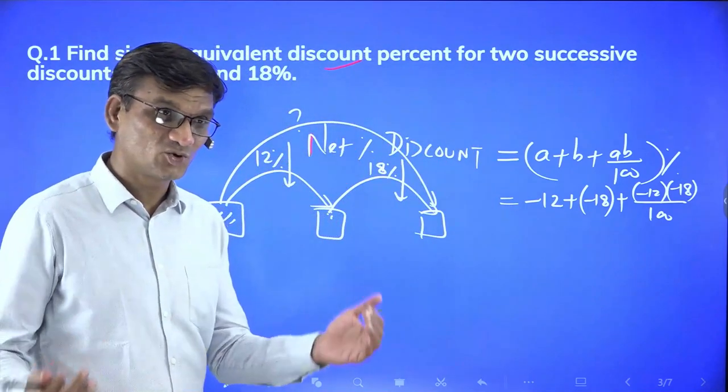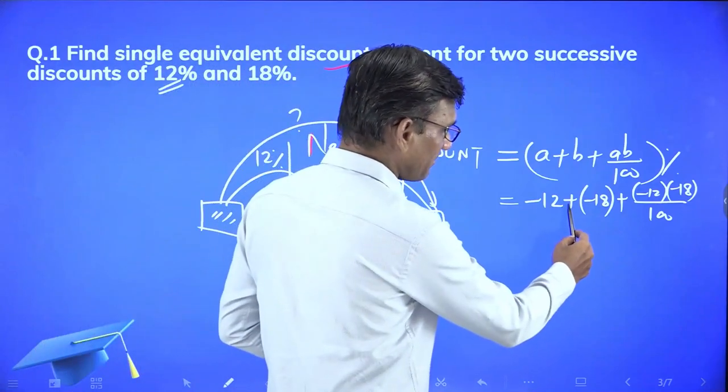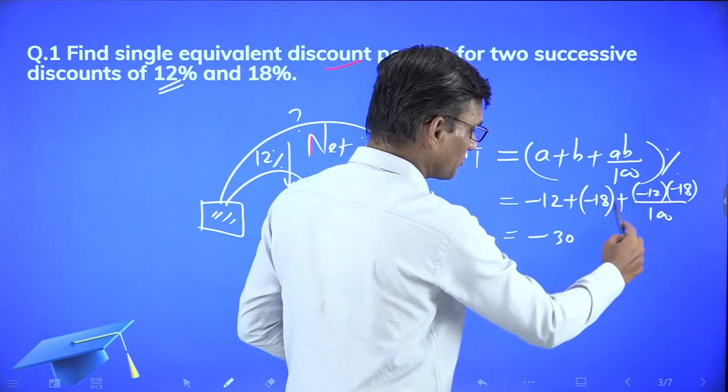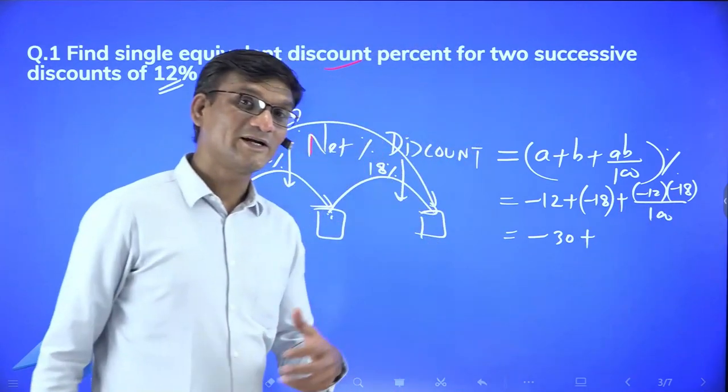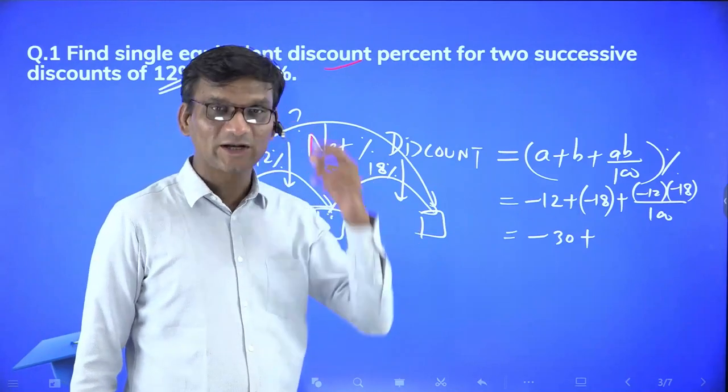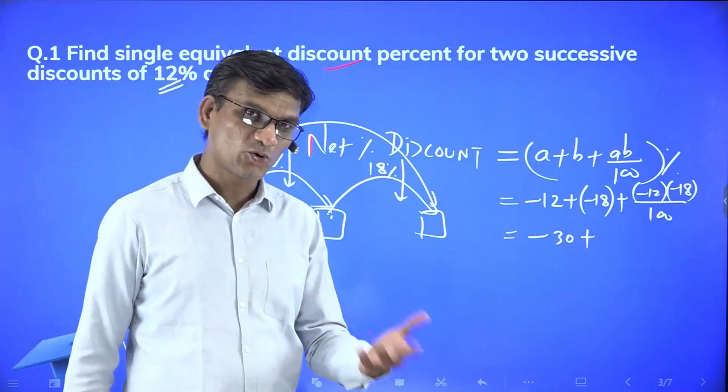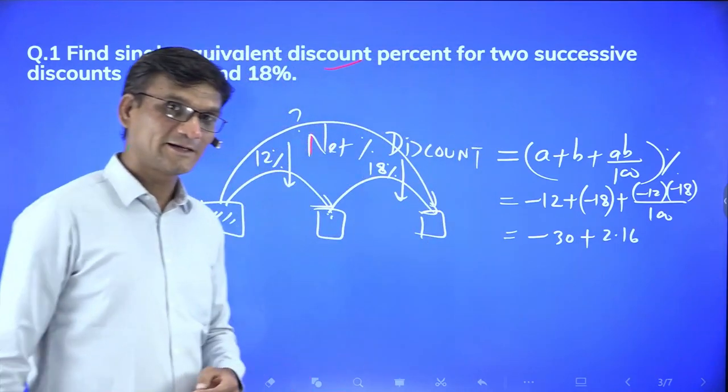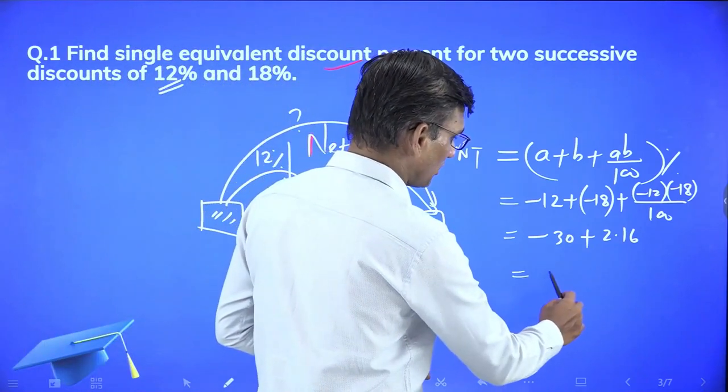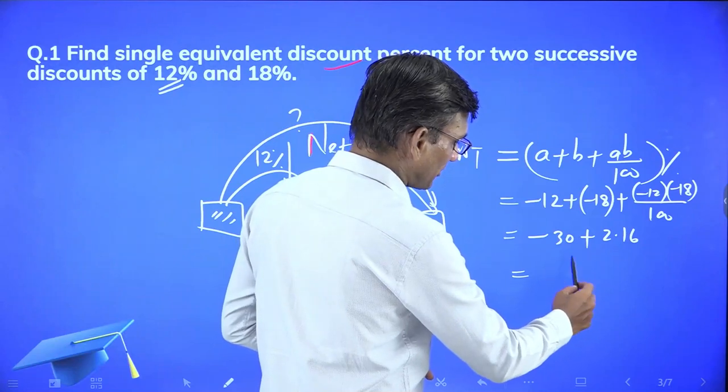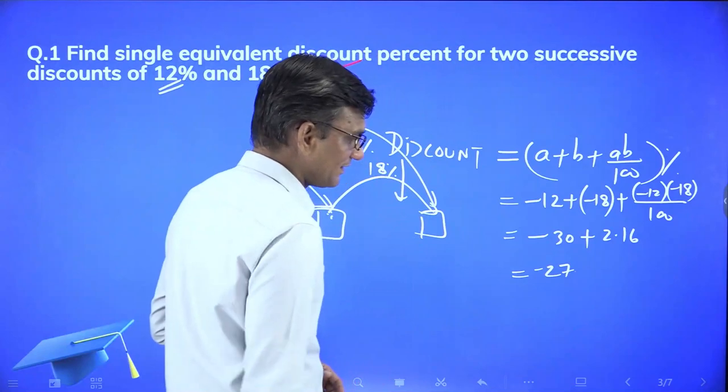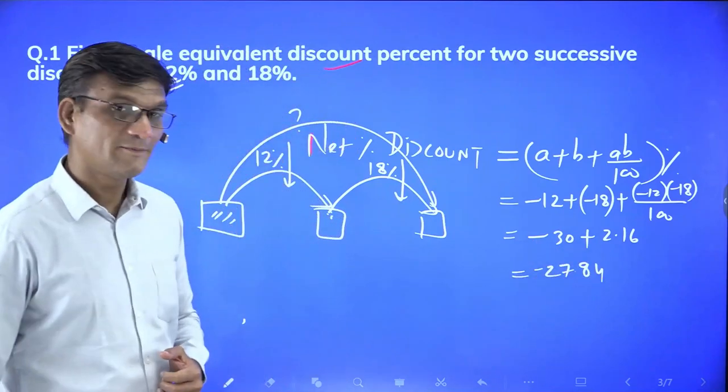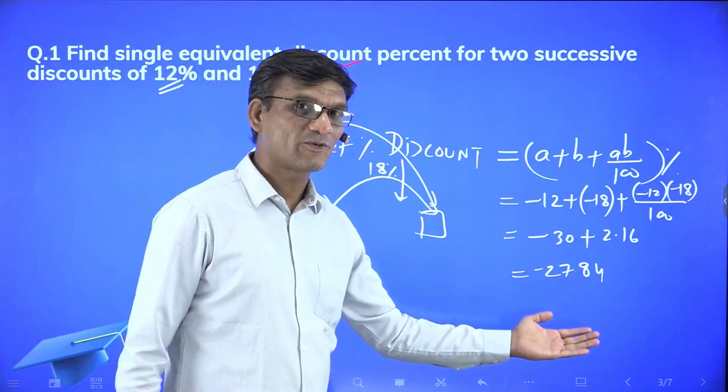Net percentage discount formula will be: a plus b plus ab by 100. Our formula is the same A-B formula. First discount was 12 percent, then on the reduced price we got 18 percent discount. So what net discount did we get? This is decreasing, so we use negative signs. a value will be minus 12, b value will be minus 18.